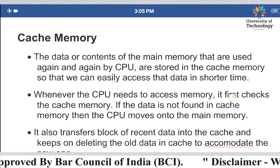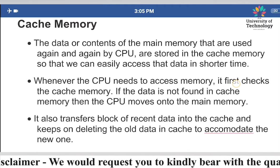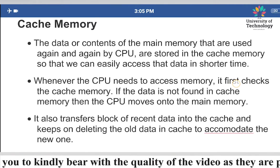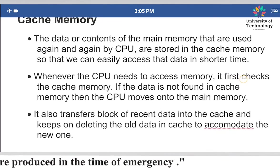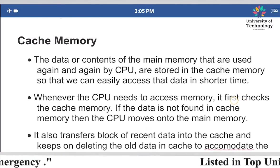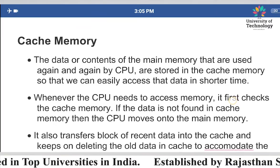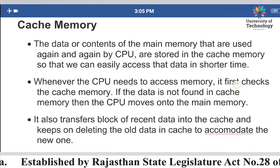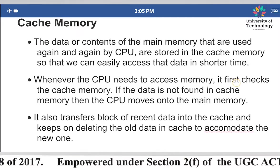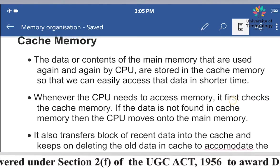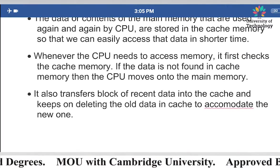In order to reduce the time of access of frequently used data from main memory, we place that data into the cache memory. By placing it in the cache memory, the CPU can easily access that data in a shorter time slot.